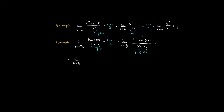We have a problem again, since when x goes to π/2, both cos(3x) and cos²(x) tend to 0. There's a solution: we rewrite this as 3 times cos²(x) divided by cos²(3x). This is again the case 0 over 0. Another application of L'Hôpital's rule gives 3 times the limit as x goes to π/2. We differentiate cos²(x) by the product rule: minus 2·sin(x)·cos(x), divided by minus 6·sin(3x)·cos(3x).